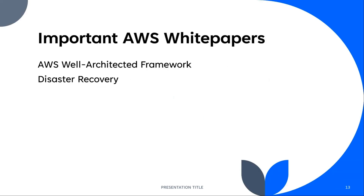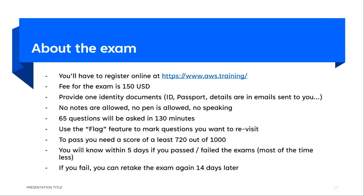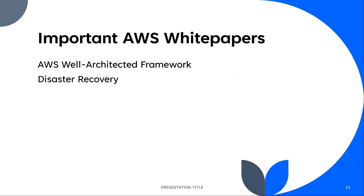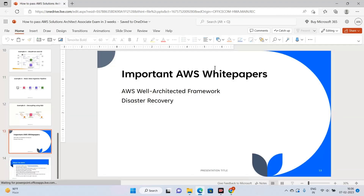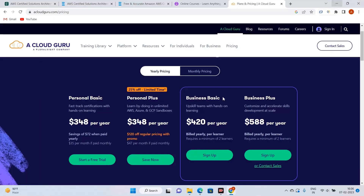For important AWS white papers, I absolutely suggest going through two: the AWS Well-Architected Framework and the Disaster Recovery white paper — that one is very, very important. Two or three exam questions may come from these two white papers, so if you want those extra marks, please go through them. I'll link them in the description.